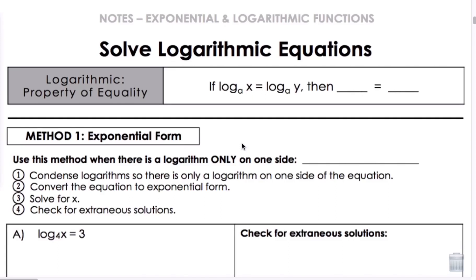This is lesson 8.4 on solving logarithmic equations. We're going to look at the logarithmic property of equality. So if we have log base a of x equals log base a of y, then we know x equals y. So when they have the same base, we can take the x and the y and set them equal to each other.